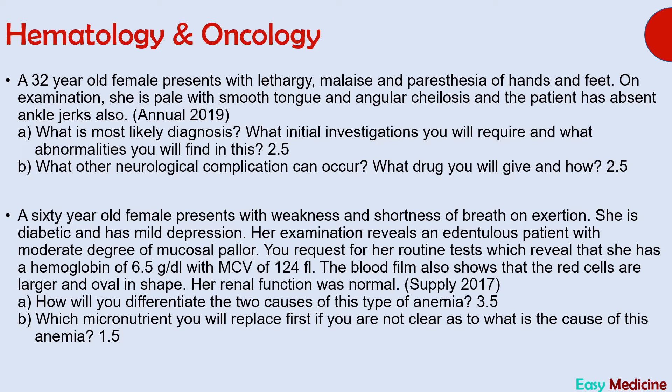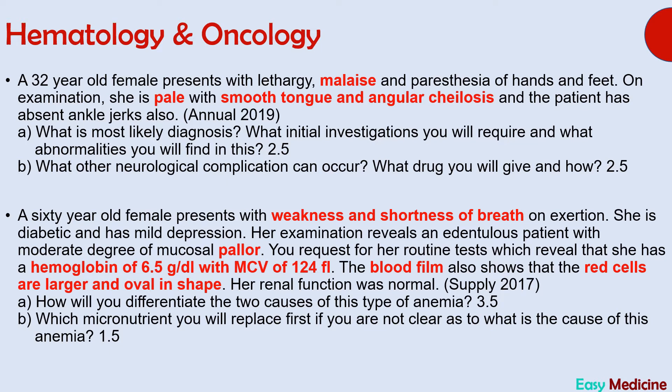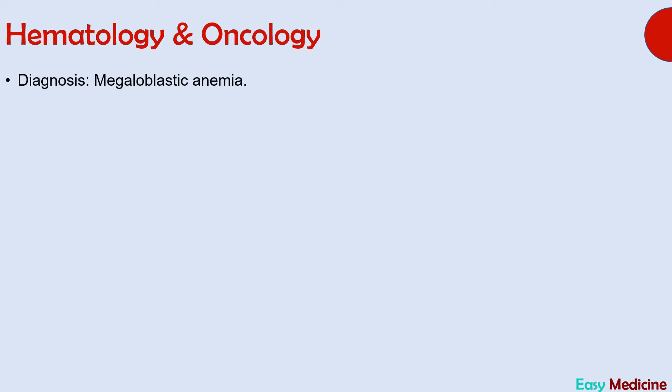The answer is megaloblastic anemia. Important points which can lead you to this diagnosis are malaise, weakness, shortness of breath, pallor, smooth tongue, and angular cheilosis. Investigations will show low hemoglobin and increased MCV, and peripheral blood film will show red blood cells that are larger and oval in shape. Presence of neurological features such as paresthesias of hands and feet and absent ankle jerks indicate that megaloblastic anemia is due to B12 deficiency.